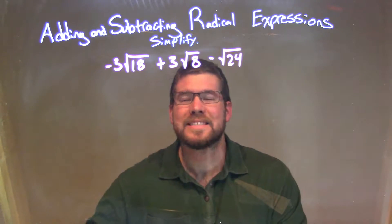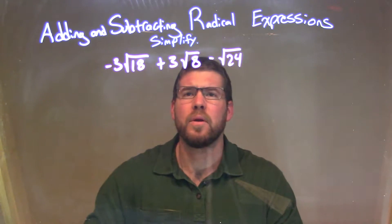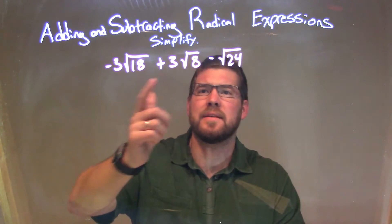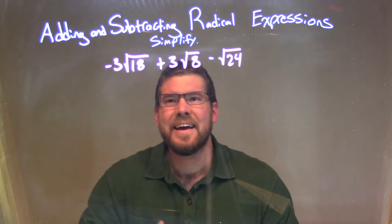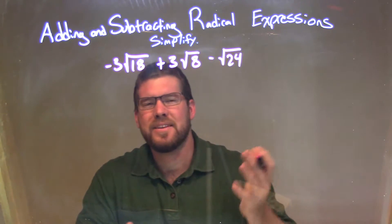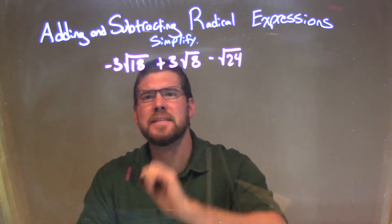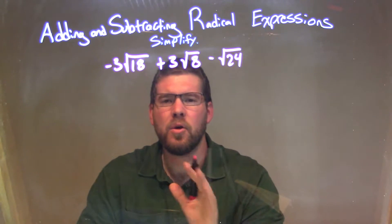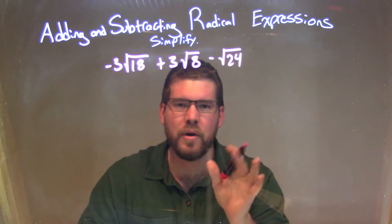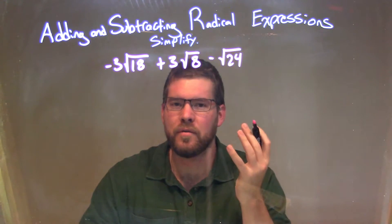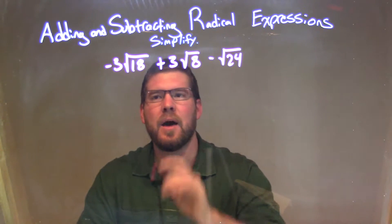If I wanted to simplify this, what I want to do is break down each one of these square roots and see if I can pull it into its simplest form. 18 — I know that is 9 times 2, and I know the square root of 9 is 3, and I can simplify it that way.